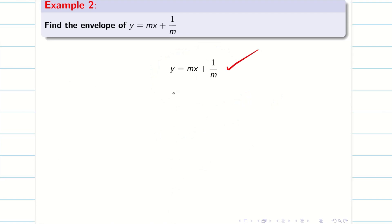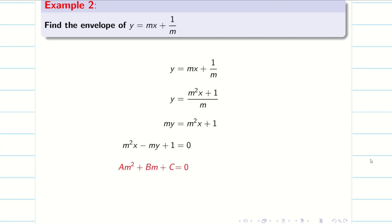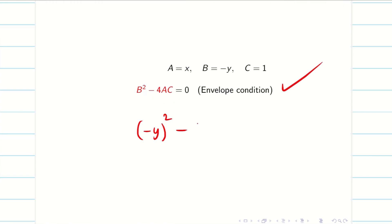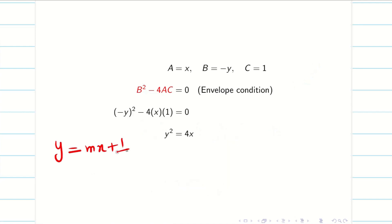Some equations, when simplified, may become quadratic. Taking LCM, it becomes m²x + 1/m, giving my = m²x + 1, so m²x − my + 1 = 0. Now it is a quadratic equation, so I do not need to differentiate. I can find capital A, B, and C. Applying the condition B² − 4AC = 0: (−y)² − 4(x)(1) = 0, so y² = 4x is the envelope. Therefore for y = mx + 1/m, the envelope is y² = 4x, which opens to the right.